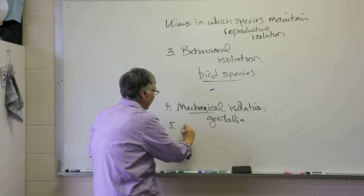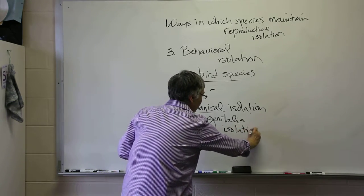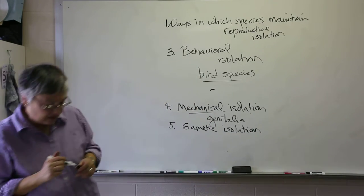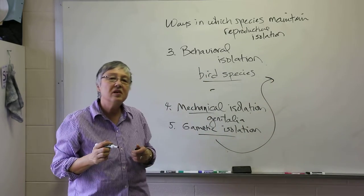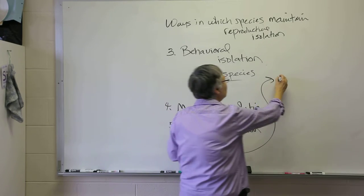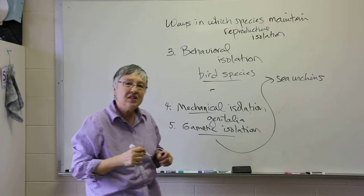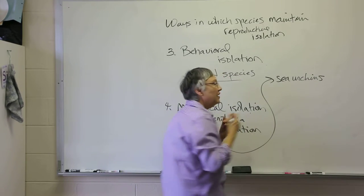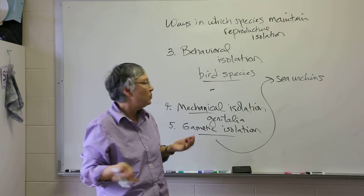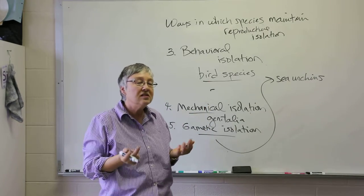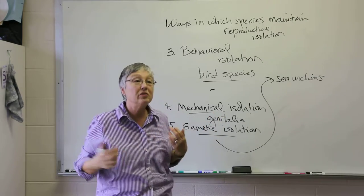And a last category is gametic isolation. And this is best seen in organisms that reproduce, for example, in the ocean, such as sea urchins. There are different species of sea urchins, and they actually will release their sperm and egg into the ocean, so it's easy for two species for those cells to intermix.